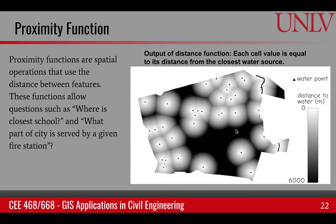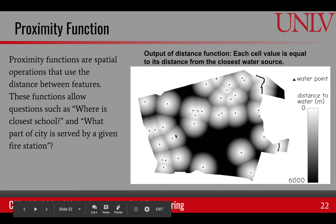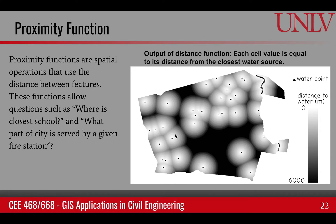Here is an example where distance is evaluated. These triangles are water points, and this image is a raster image where every pixel takes the value of the distance to the closest water source. Once we have distance information, we can find all the points within a certain distance from a water source. Proximity functions can be really helpful for distance-based analysis.